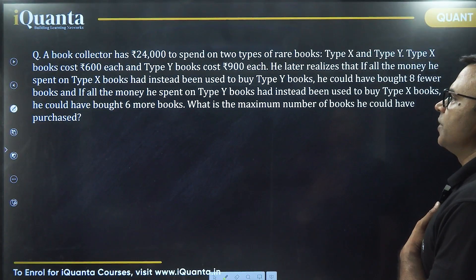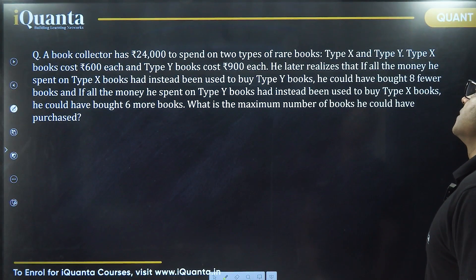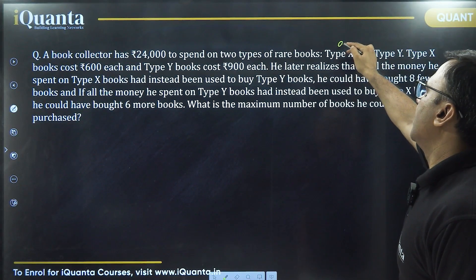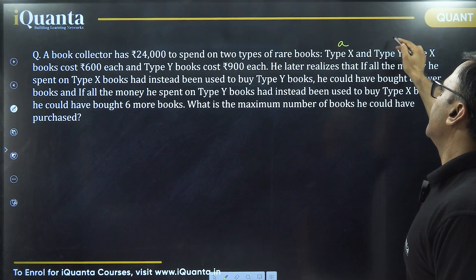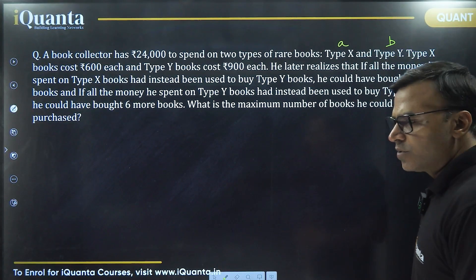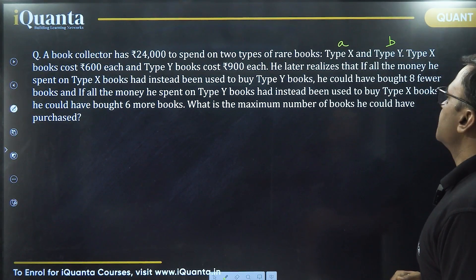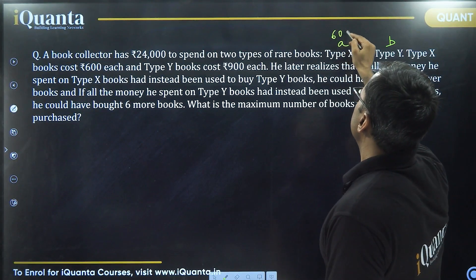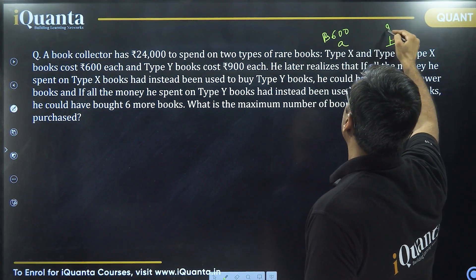This question says a book collector has 24,000 rupees to spend on two types of rare books, type X and type Y. Suppose the number of books of type X is A and number of books of type Y is B. A and B are the number of books of these two types. The first one costs 600 rupees each and the second one costs 900 rupees.